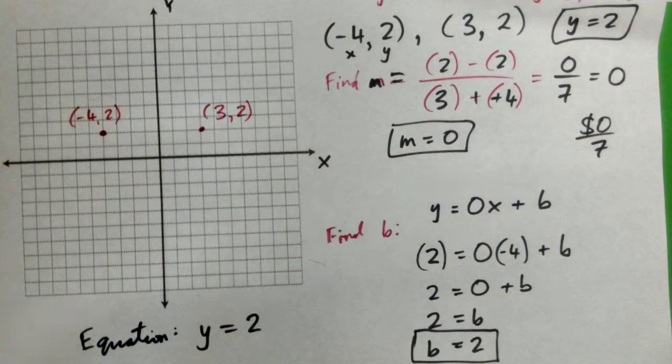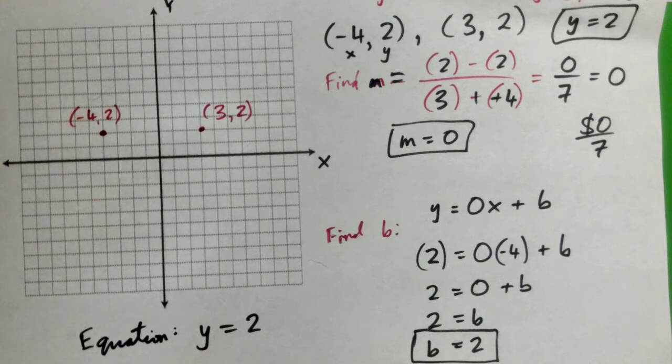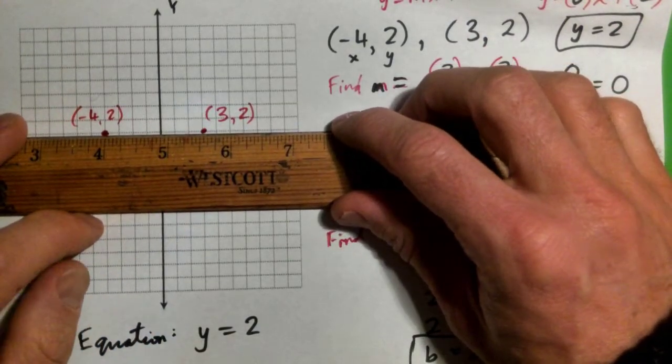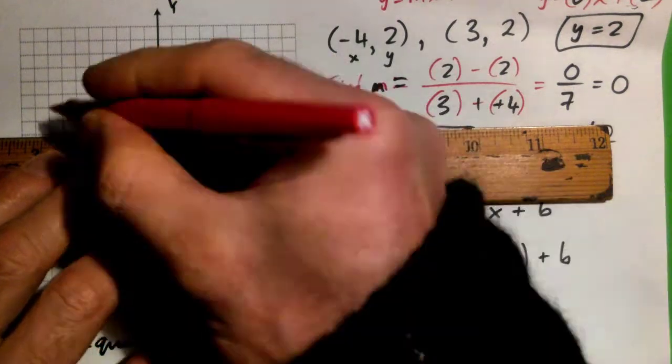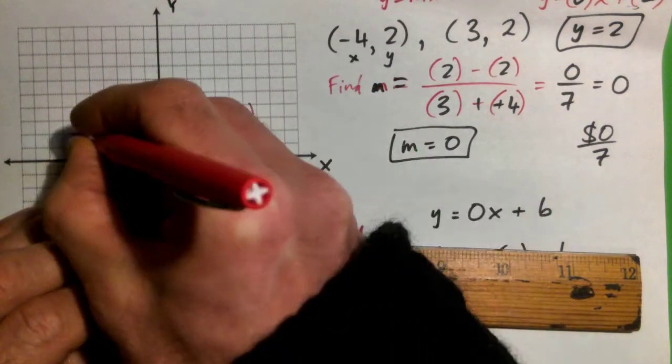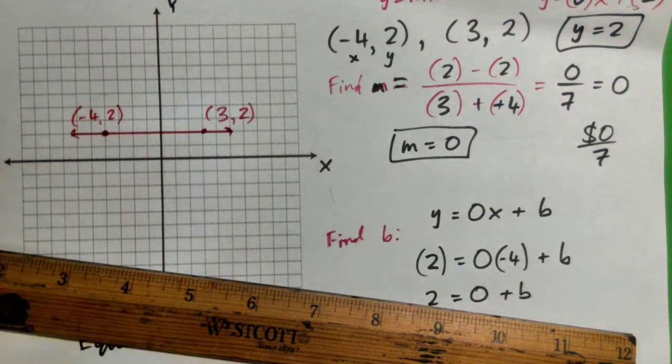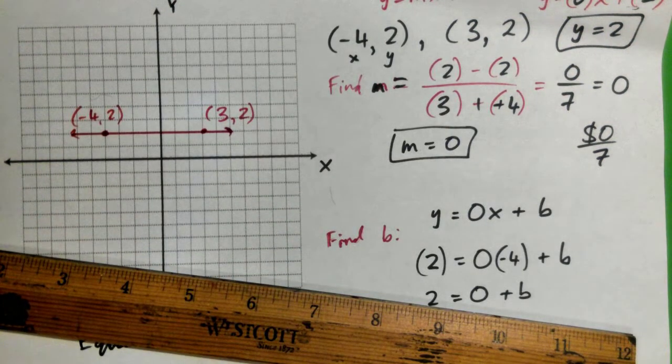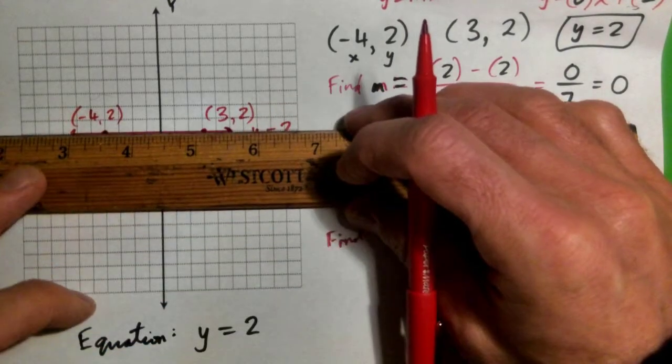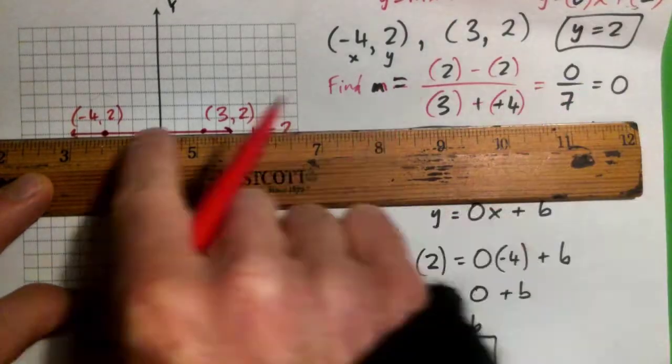And we want to find the equation of a line that goes through both points. So I'll just reach over and get my ruler, and the line looks like this. It's just a horizontal line that goes through both points. And that is just y = 2. That's the line. It's a horizontal line that has no slope. Slope 0 because it's flat. Flat line.